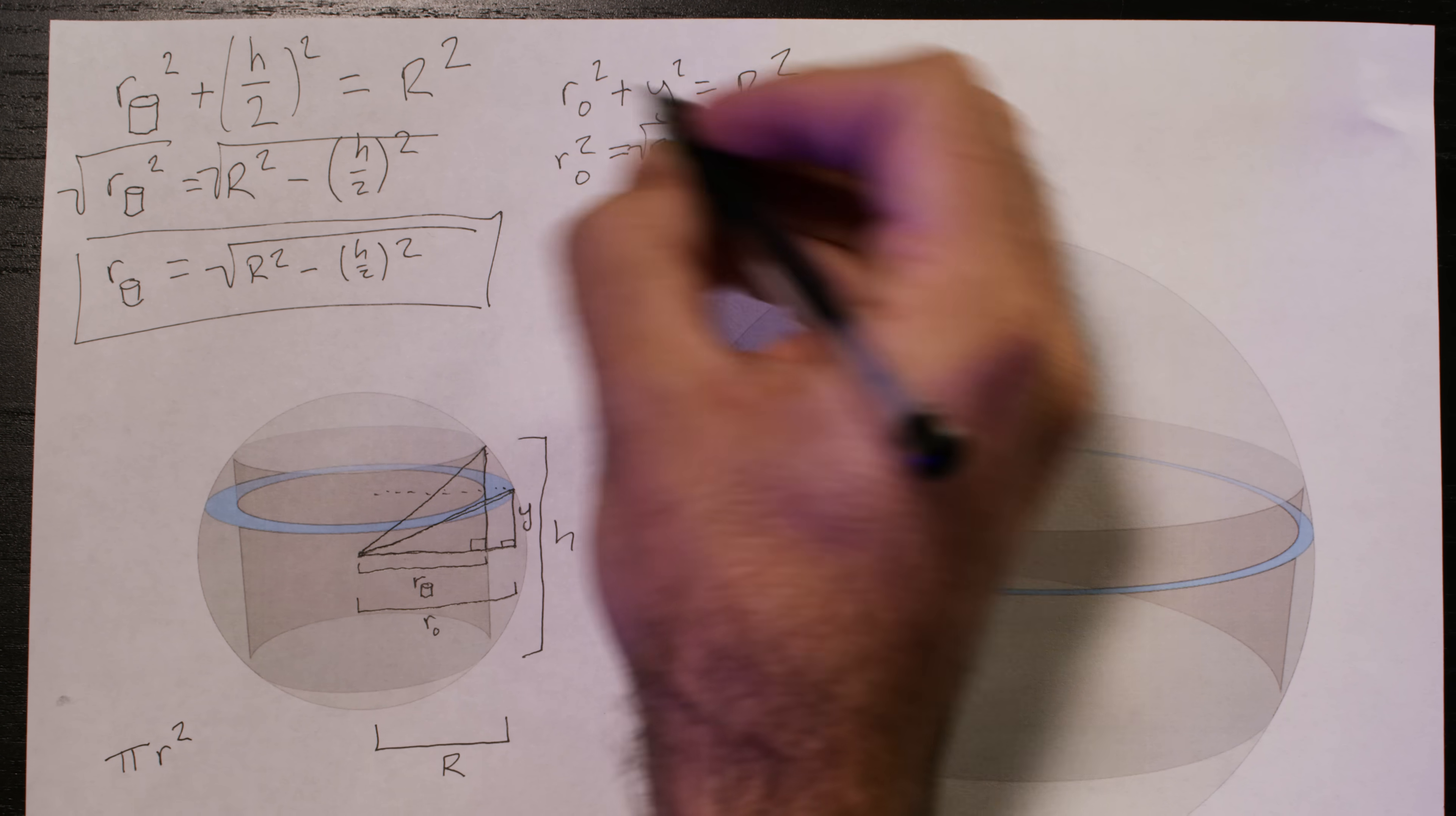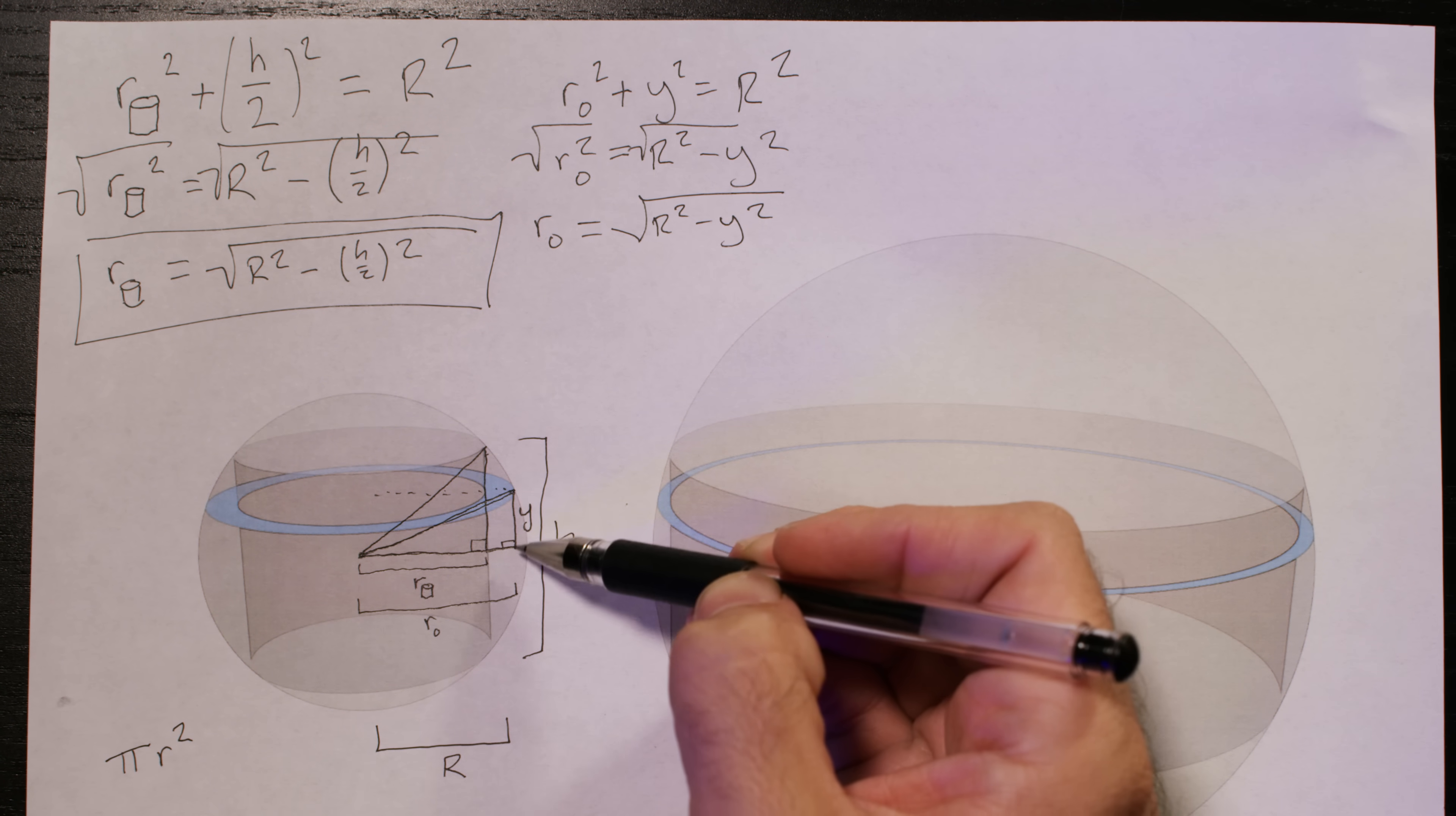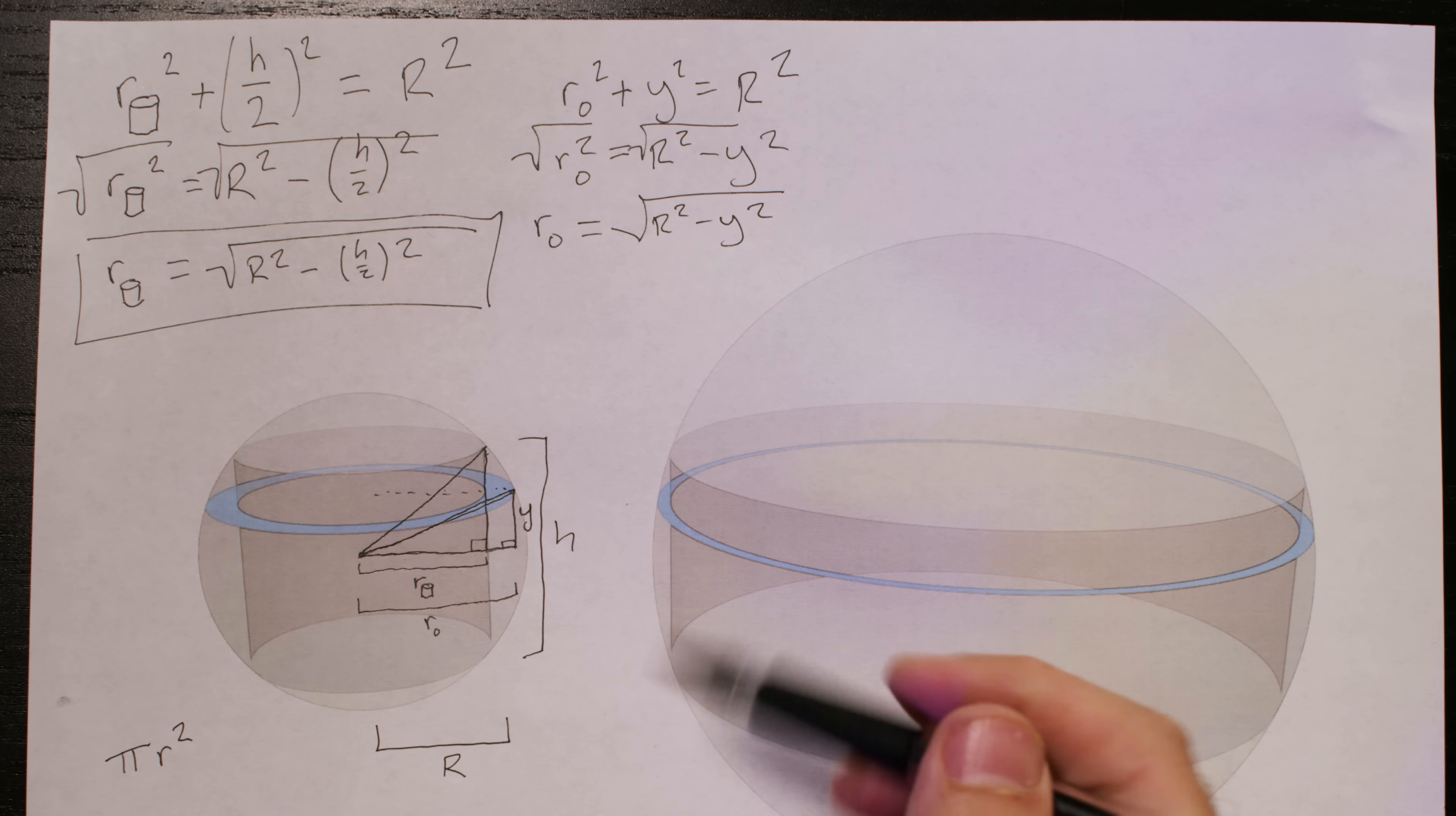We'll take the square root of both sides and end up learning that the radius of the sphere's cross section equals the square root of the radius of the sphere squared minus Y squared. Why is the height that this cross section is taken from above the equator? The higher up we take these cross sections of the sphere, the smaller their radii will be, whereas the cylinder's radius is always the same no matter where we cut from.